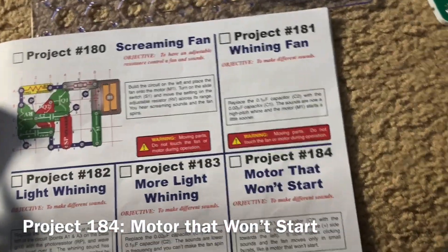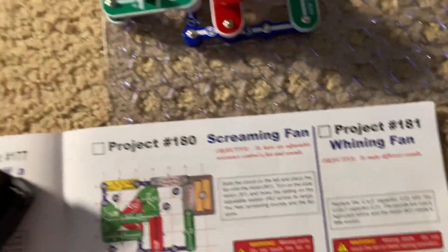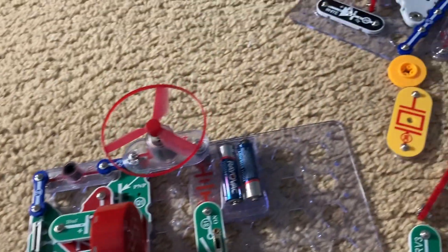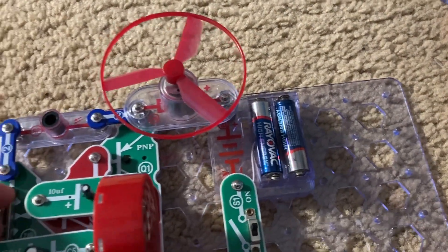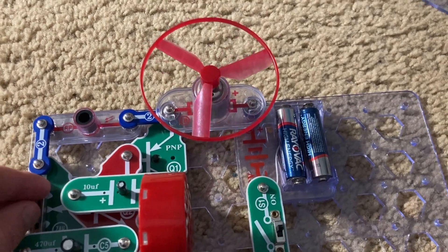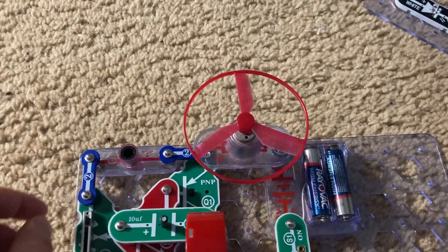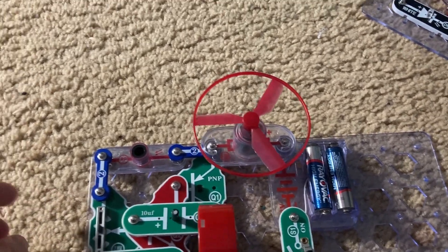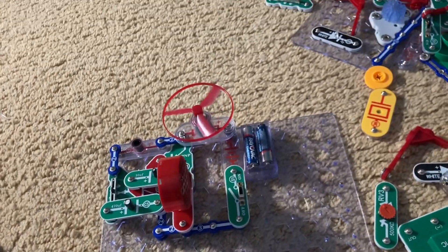This is a motor that won't start. I replaced the C2 capacitor with the C3 one and now the motor or fan will only move in short bursts depending on the setting of the RV. No matter what setting it is, it's just going to move.